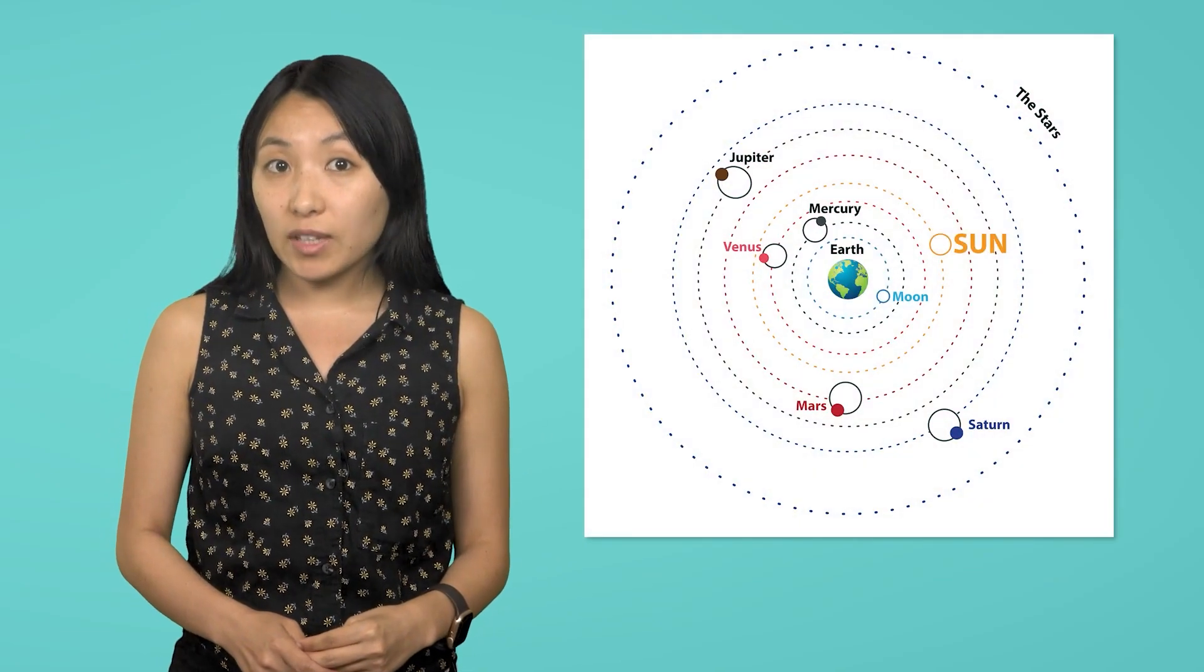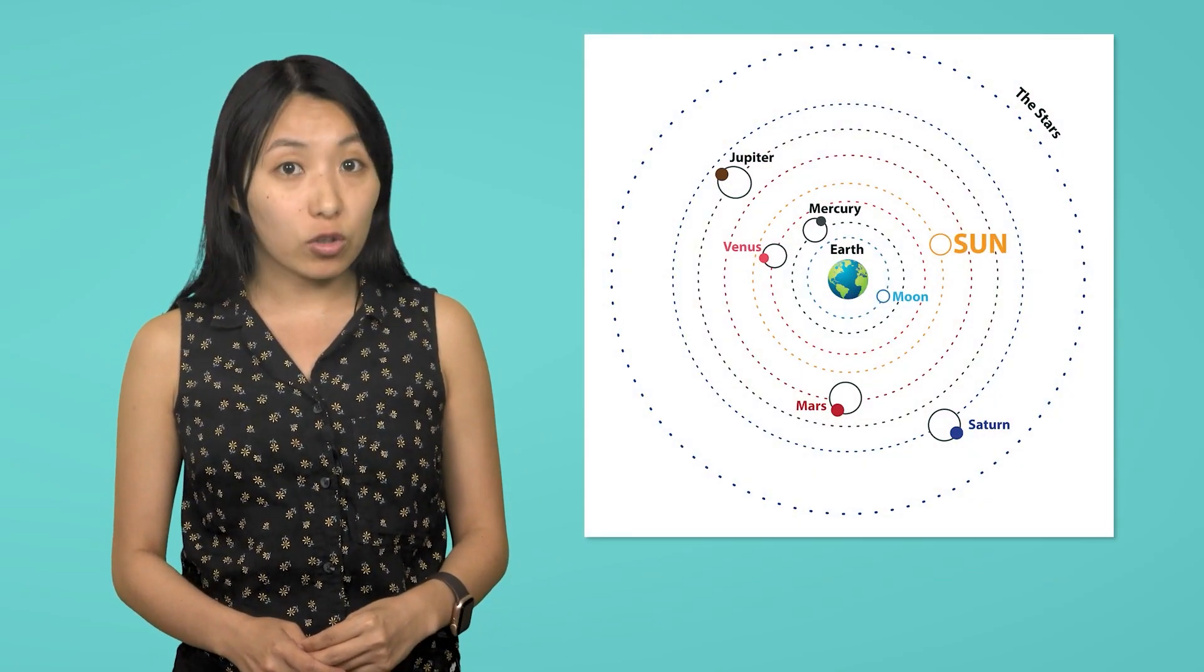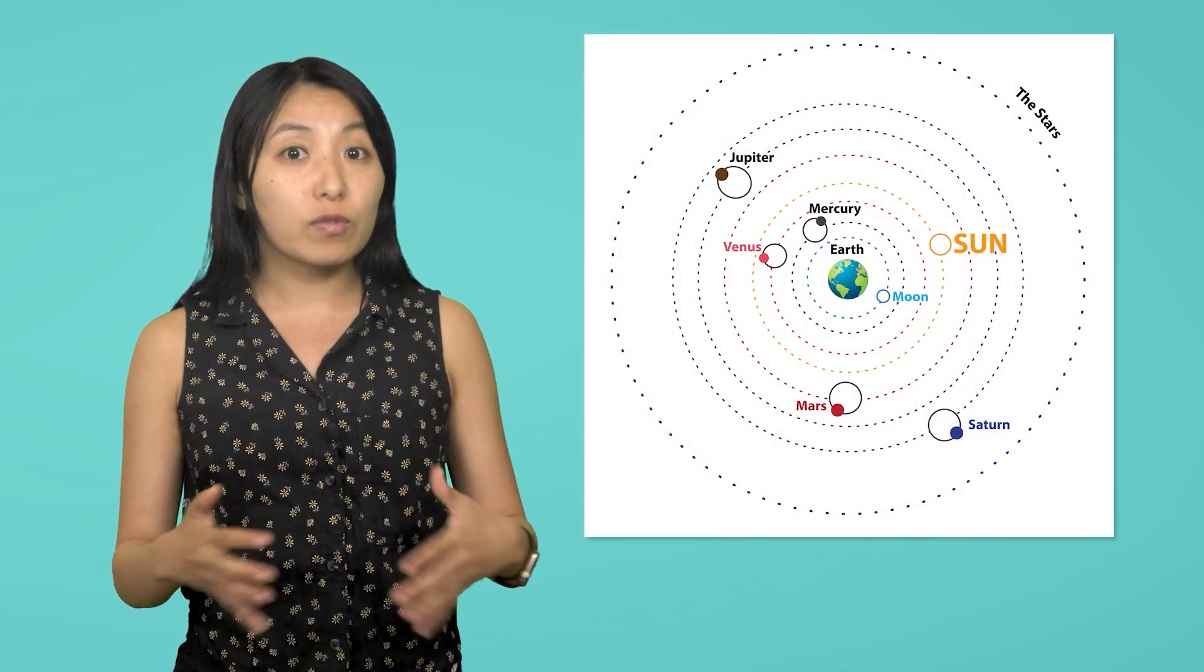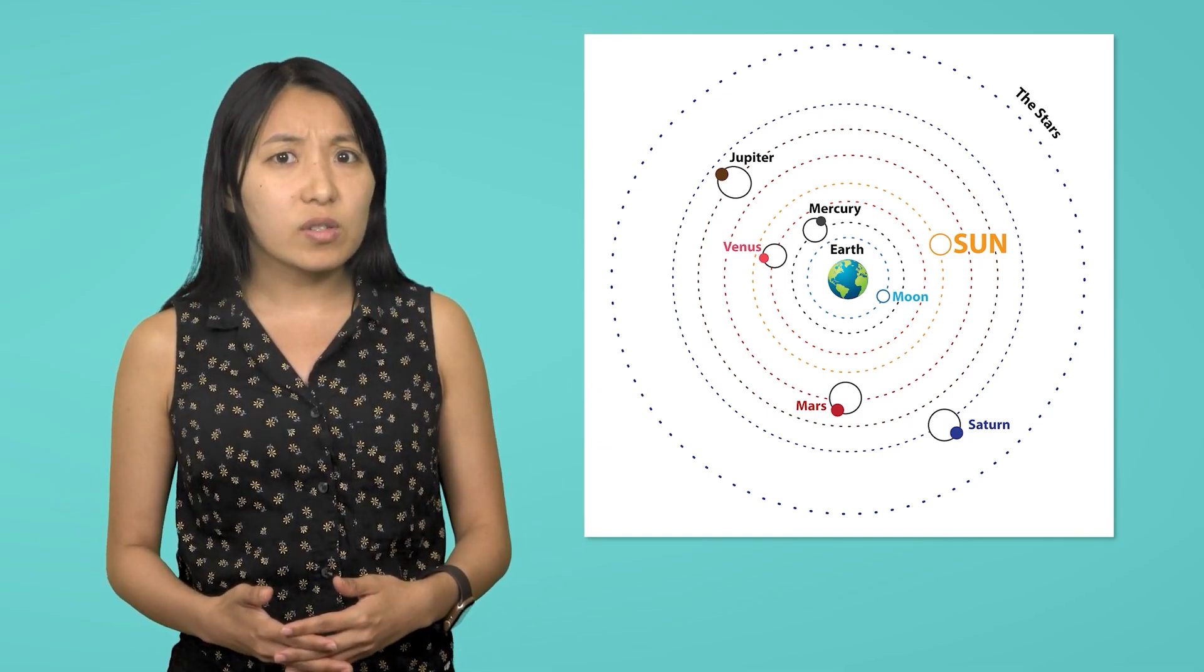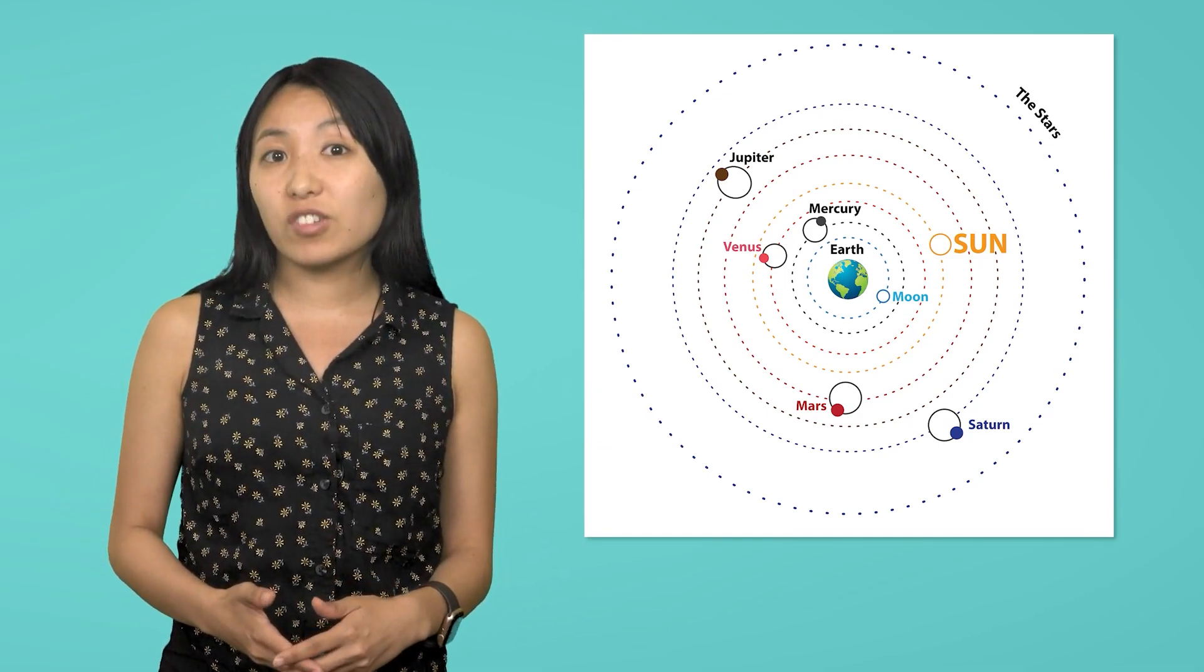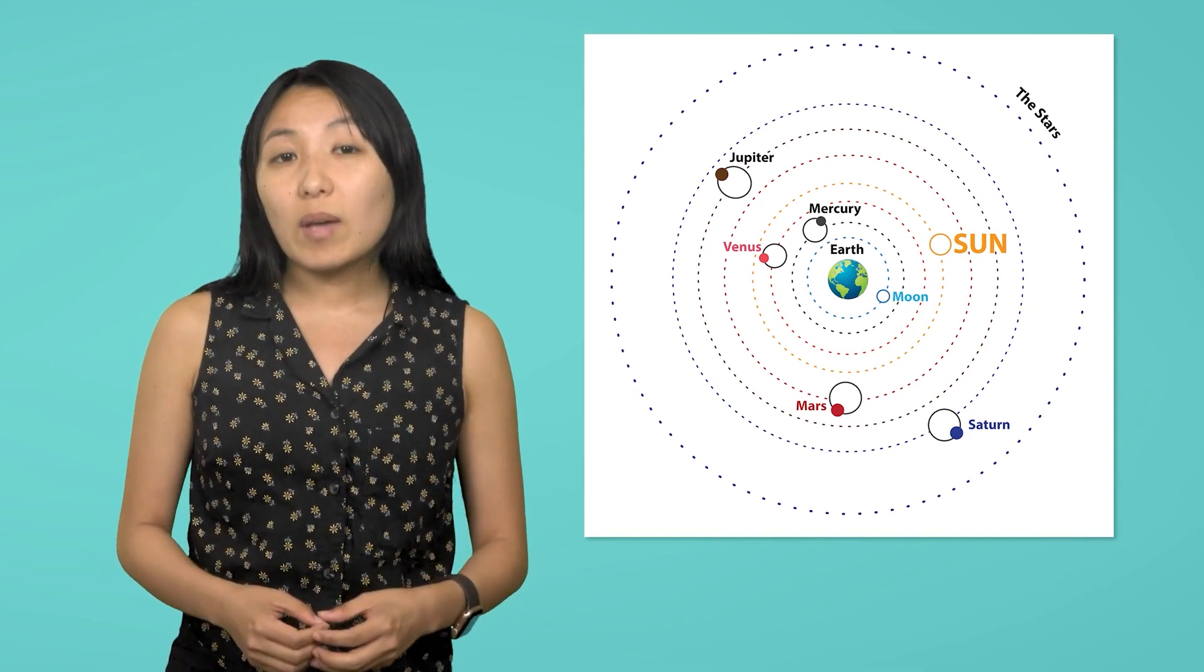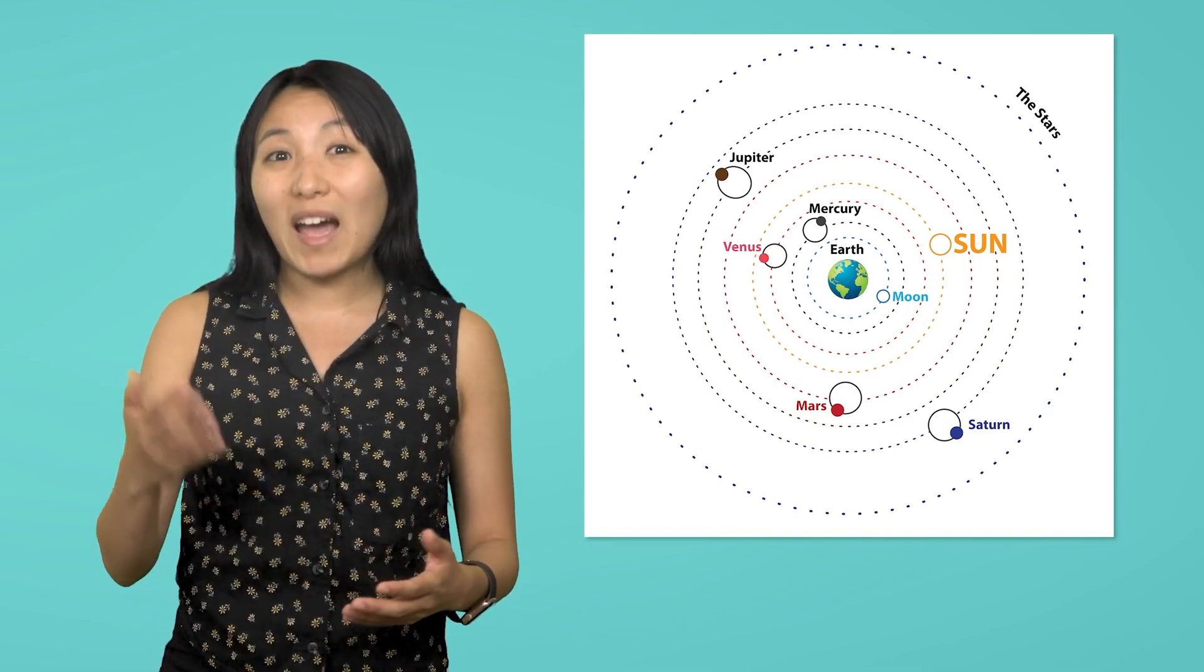Ptolemy had a theory that each planet moved in its own small circle, while those small circles moved in bigger circles around the Earth. It's a lot of circles. But it did explain some things that Aristotle's model couldn't, like why planets sometimes appeared to move backwards in the sky.